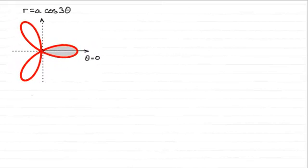Hi there. In this video, I want to show you how to find the area within this loop for the polar curve with equation R equals A times the cosine of 3 theta, where A is a constant.